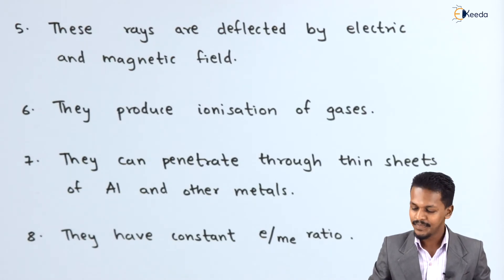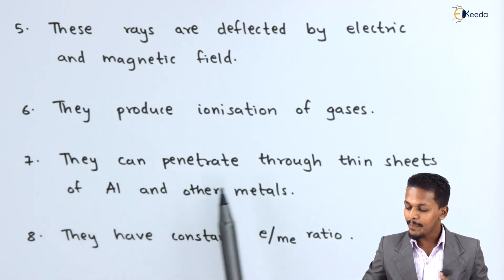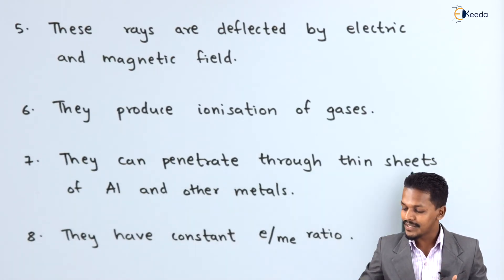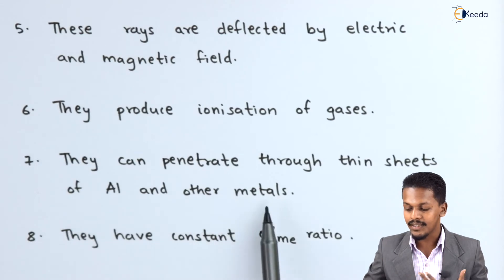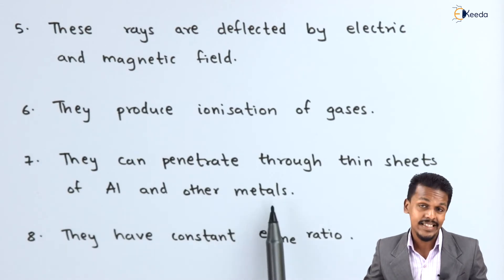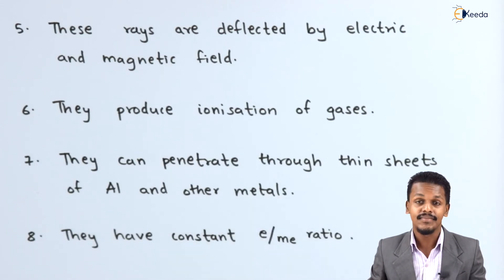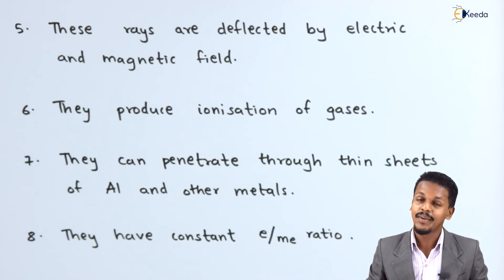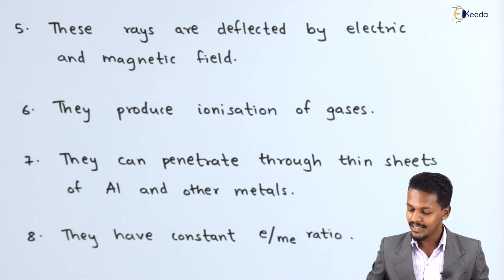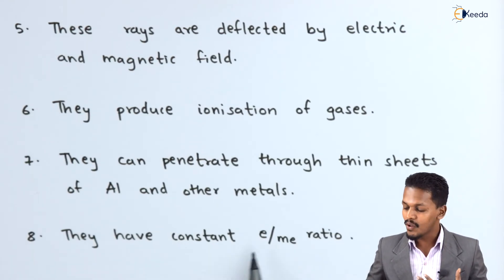Cathode rays can penetrate through thin sheets of aluminum and other metals. This also indicates an important property of cathode rays.